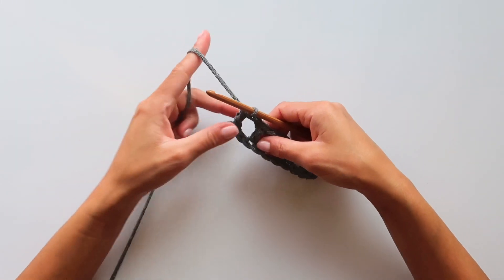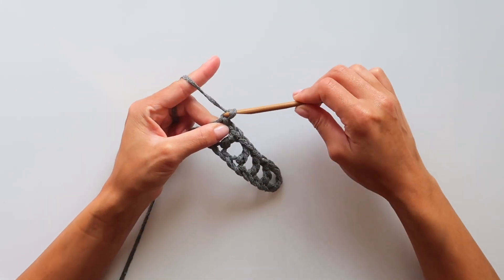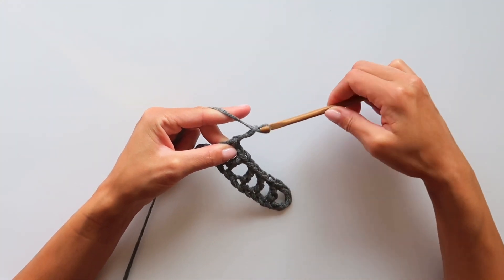This is the first row. Now we will turn our project, but before that we have to chain four.